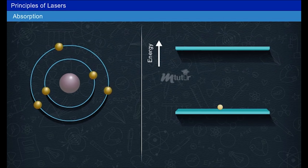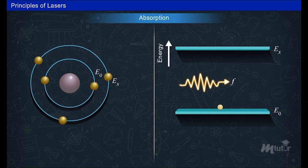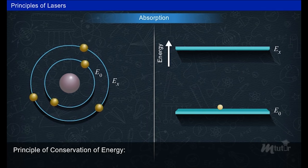Let us consider two different states of an electron such as ground state E_0 and excited state E_x. Electromagnetic energy falls on an atom in the form of photon of frequency f.